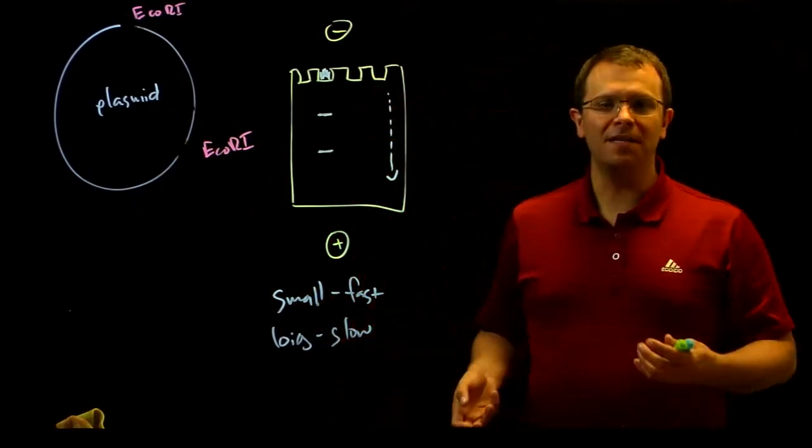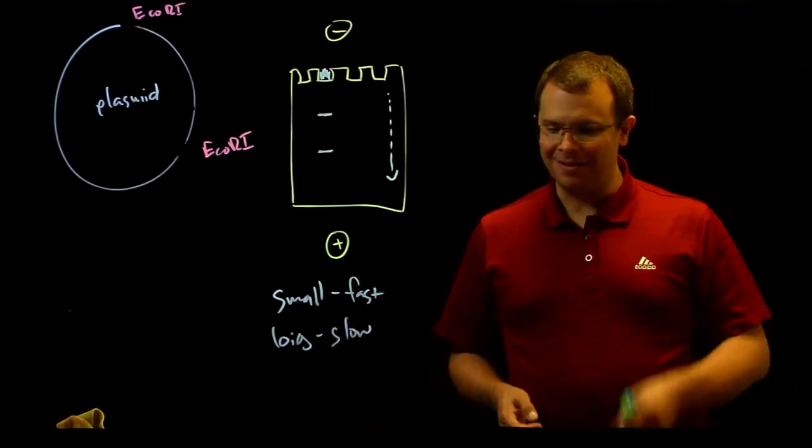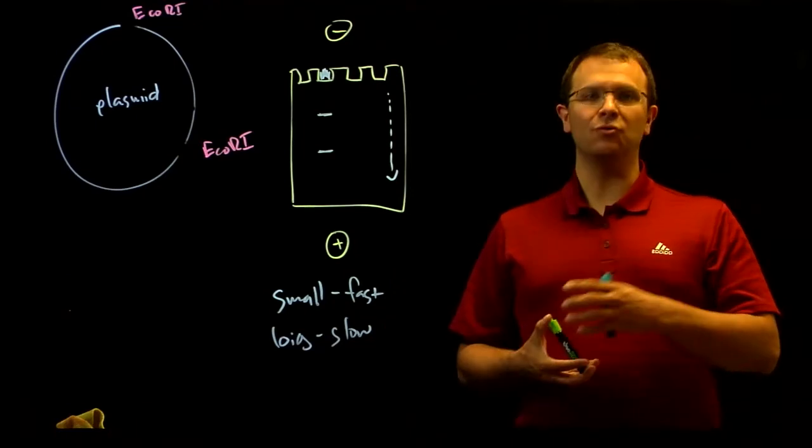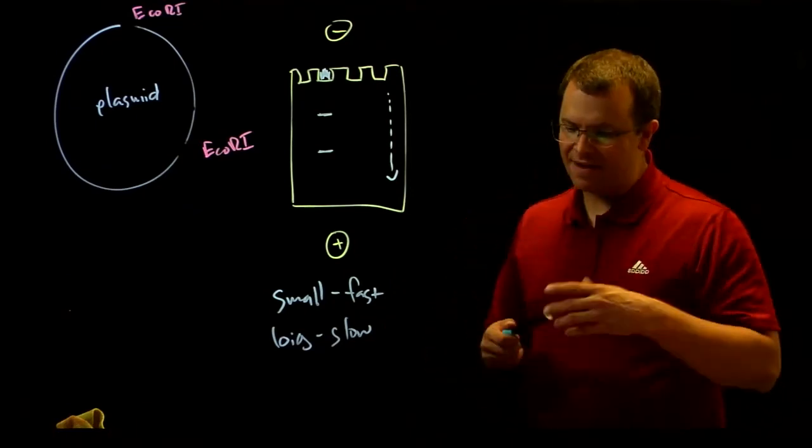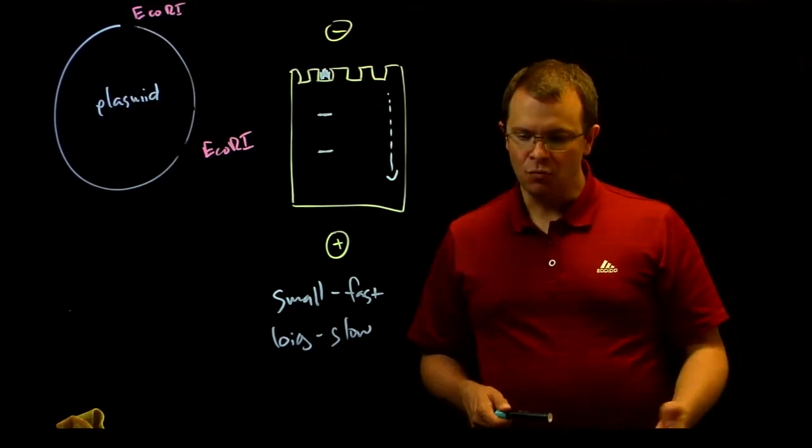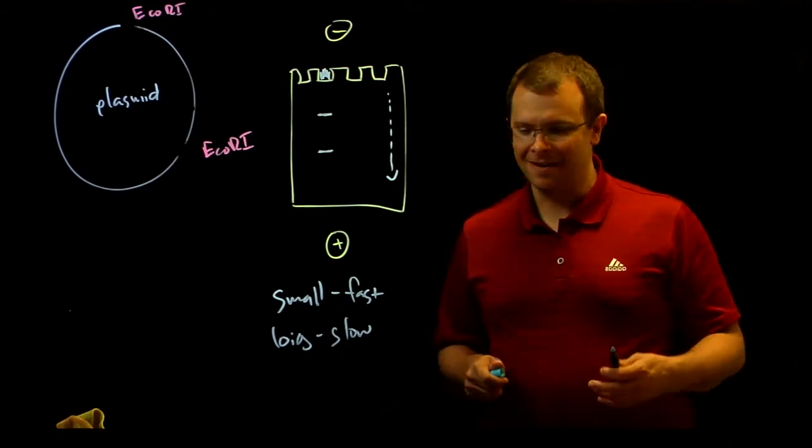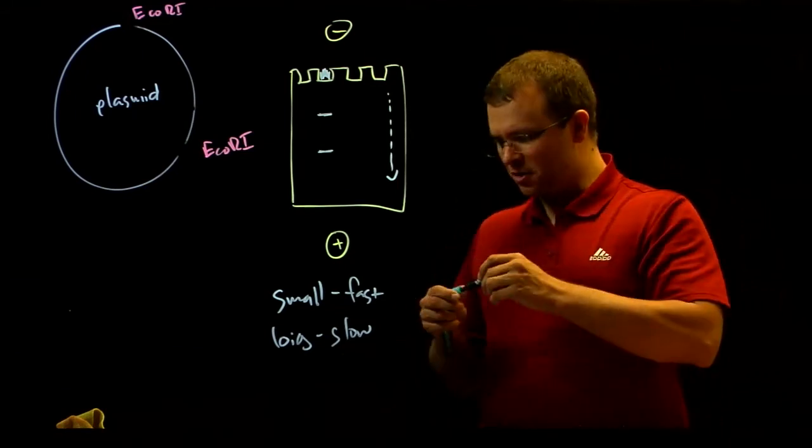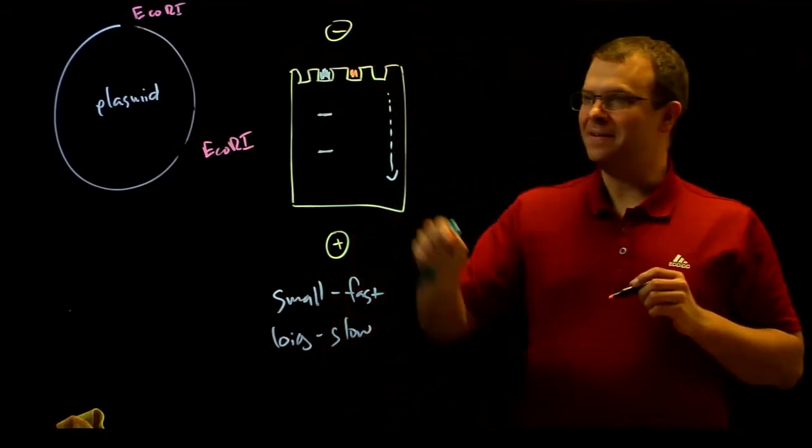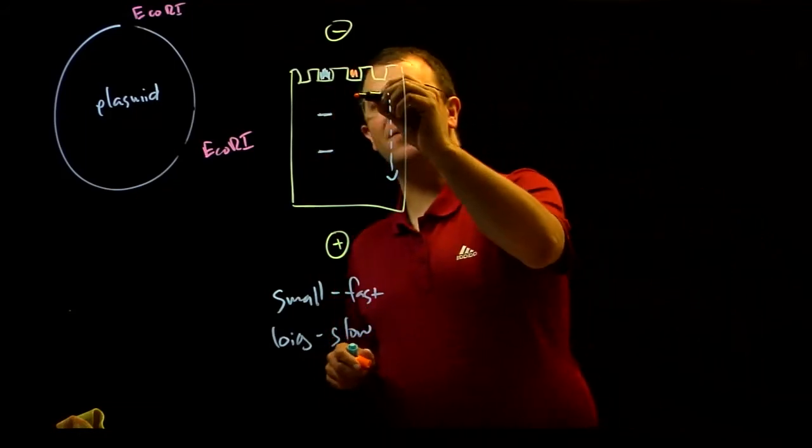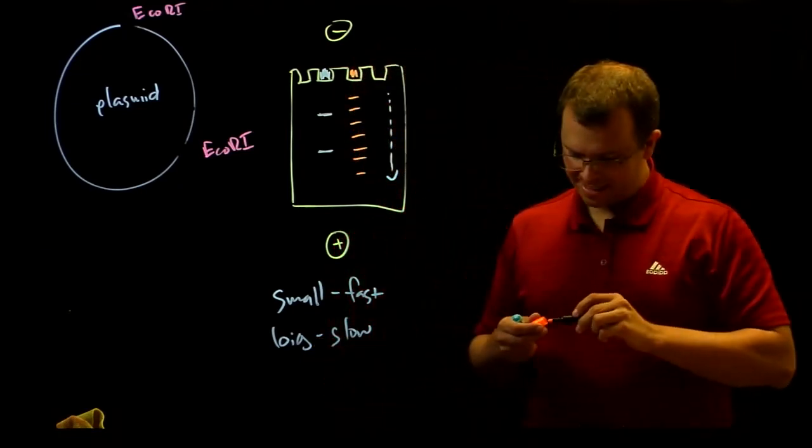We can solve this problem by running on the same gel, at the same time, a molecular weight standard, a commercial product that's a mixture of DNA fragments whose sizes we do know. Colloquially, we often call this a ladder. That's because if you put your ladder into a well next to your unknown sample, you'll see a pattern that looks something like this.